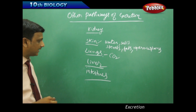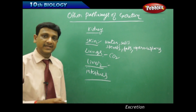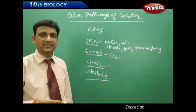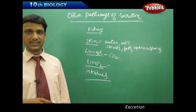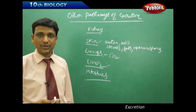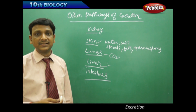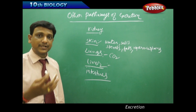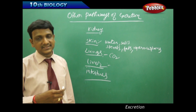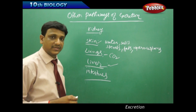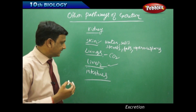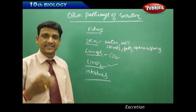The liver detoxifies many harmful chemicals and drugs. Medicines are metabolized and made harmless in the liver. Synthetic food additives, food colors, and artificial substances added to food are neutralized and detoxified by the liver. The liver converts poisonous substances into non-harmful forms, which are then excreted out of the body. The intestines excrete undigested food out as fecal matter.